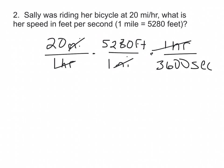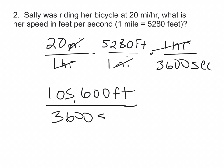Now we just do our multiplication. 20 times 5,280, 105,600 feet in 3,600 seconds. And then we finally divide.